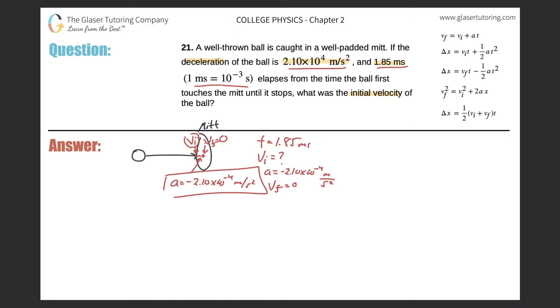What I'm actually going to do first, before I think about any equations, is make sure I have consistent units. I noticed the time was in milliseconds, but my acceleration is in seconds. That's not good. Let's take 1.85 milliseconds and convert that into seconds. 1.85 milliseconds times 1 millisecond for every 10 to the minus 3 seconds. When you multiply that, it comes out to 0.00185 seconds.